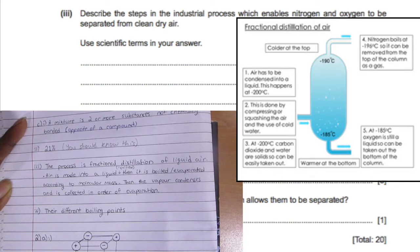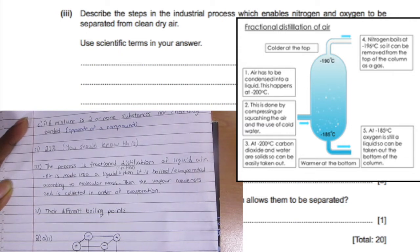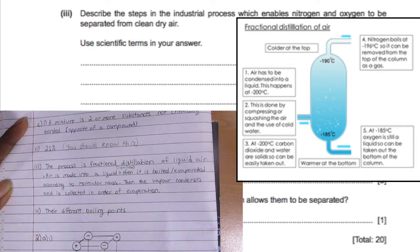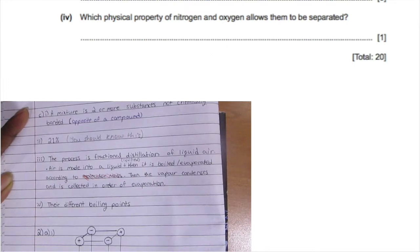For triple i, we have a mixture of nitrogen and oxygen and we're supposed to separate it. So basically this process is fractional distillation of air. The first thing is the air is supposed to be liquefied, then it's boiled or evaporated according to its molecular mass or boiling point. The vapor will condense and collect in order of evaporation, and the nitrogen will evaporate earlier than the oxygen because it has a lower boiling point. The property that allows this to happen is that they have different boiling points.